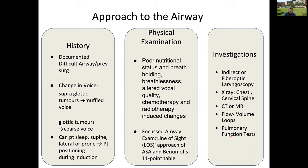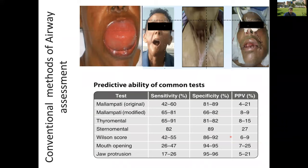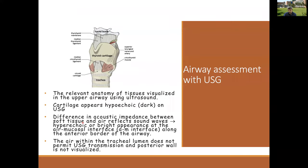All this history, examination, and investigation helps us formulate the best airway management plan for that patient. An important issue is that conventional airway assessment tests — Mallampati, thyromental distance, sternomental distance, Wilson score, mouth opening, jaw protrusion — all have low sensitivity and specificity, and their positive predictive value is also not very good. Something that appears difficult may turn out to be simple, and vice versa.